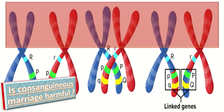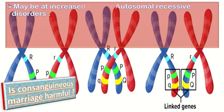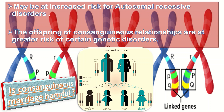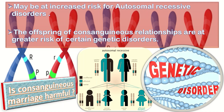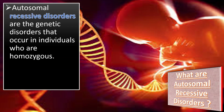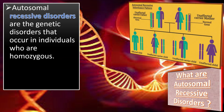Is consanguineous marriage harmful? The offspring of consanguineous unions may be at increased risk for recessive disorders because of the expression of autosomal recessive gene mutations inherited from a common ancestor. The offspring of consanguineous relationships are at greater risk of certain genetic disorders. Autosomal recessive disorders are genetic disorders that occur in individuals who are homozygous for a particular recessive gene mutation.